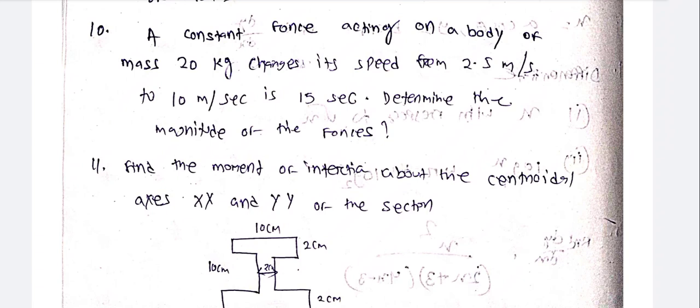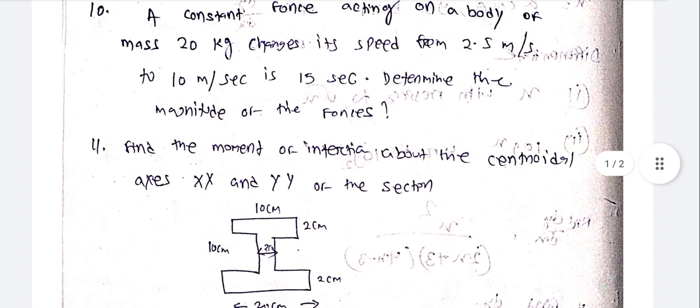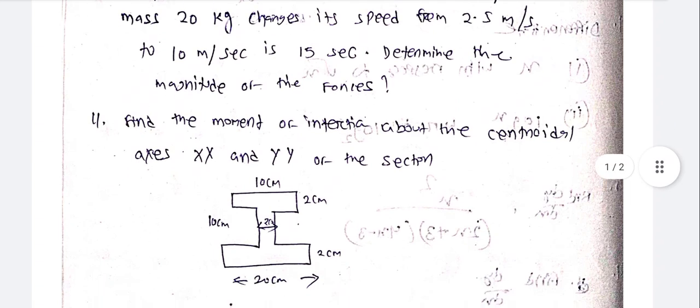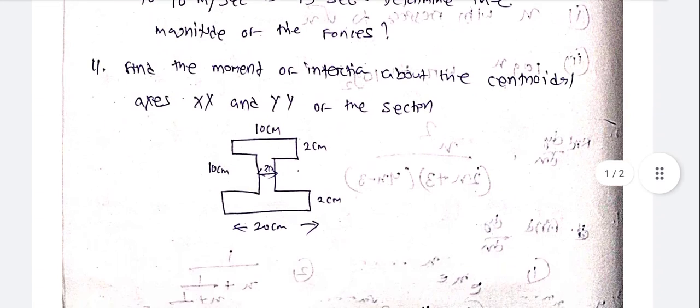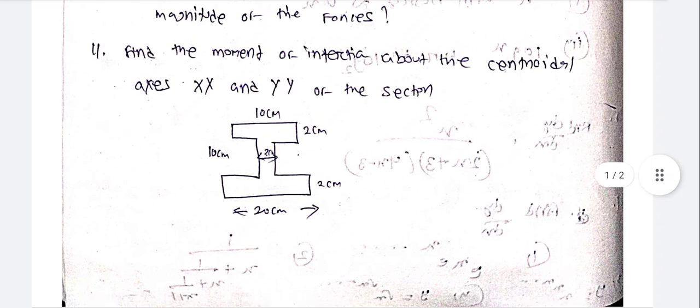A constant force acting on a body of mass 20 kg changes its speed from 2.5 m/s to 10 m/s in 15 seconds. Determine the magnitude of the forces. Find the moment of inertia about the centroidal axis XX and YY of the section.